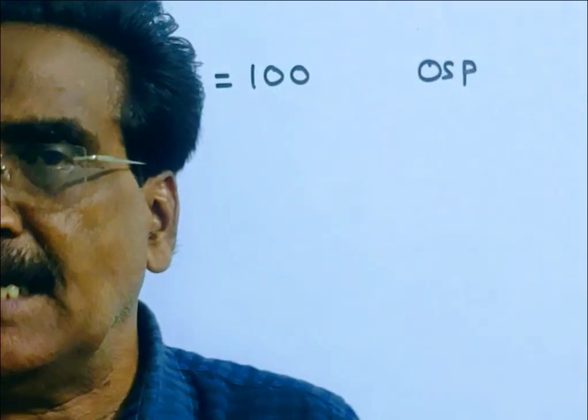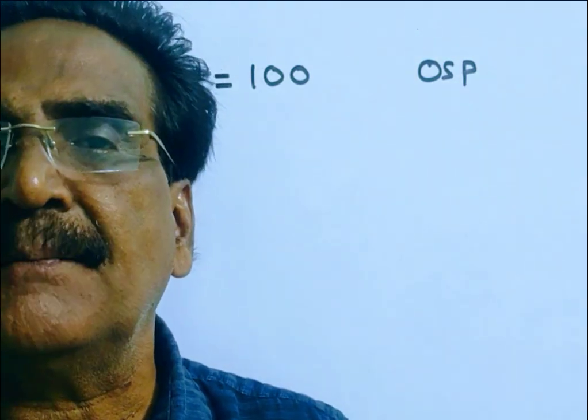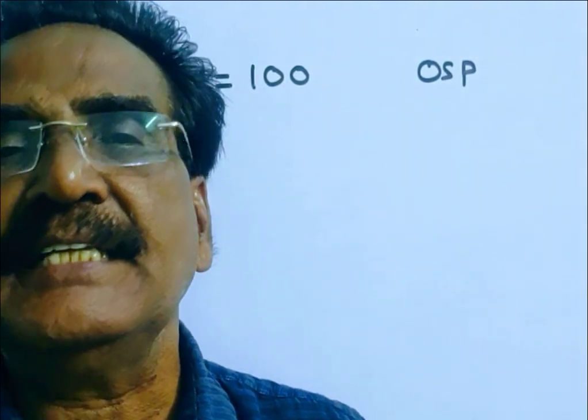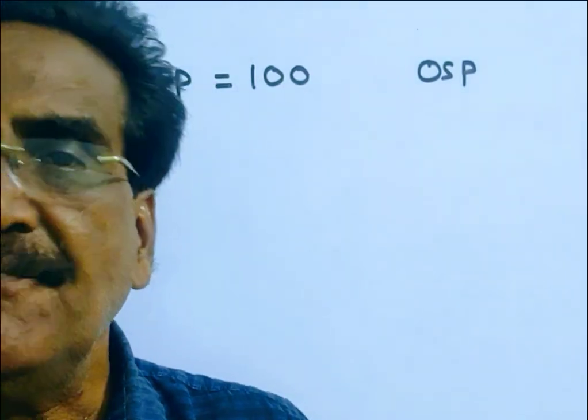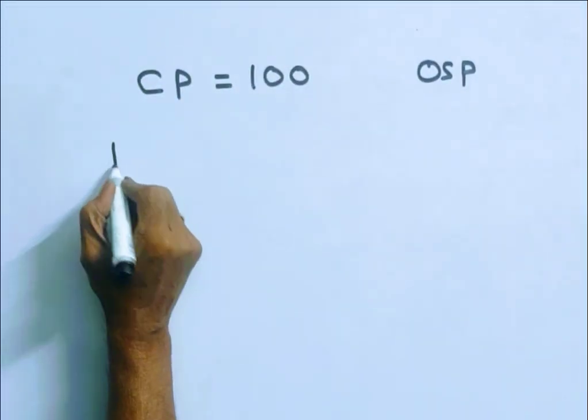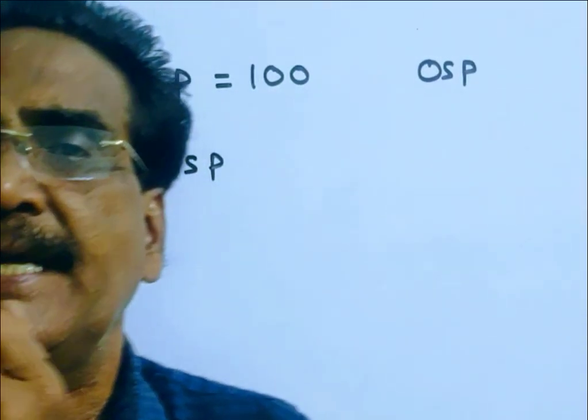An article is sold at a certain price — that certain price is the original selling price. If it is sold at 33⅓% of the original selling price — and 33⅓% means 1/3 — then there will be a loss of 33⅓%, which means 1/3 loss.